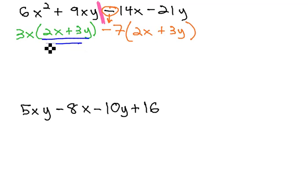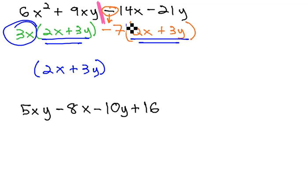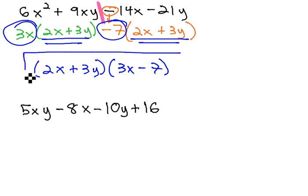You notice we have the matching binomial that we're looking for as we factor by grouping. 2x plus 3y is our first factor. Our second factor is what's left when that is factored out, the 3x minus 7, and we have our solution.